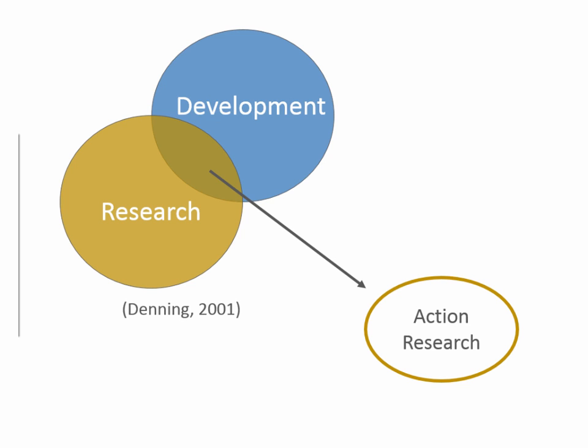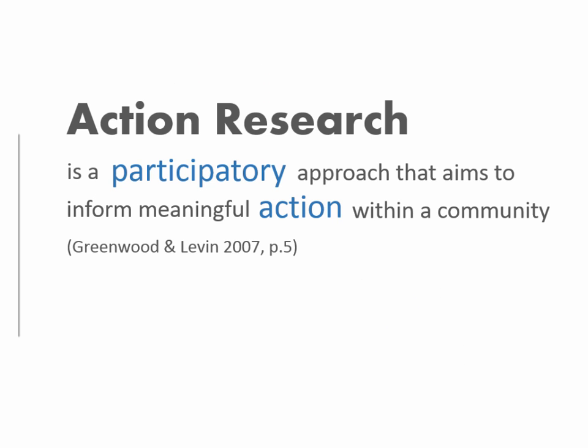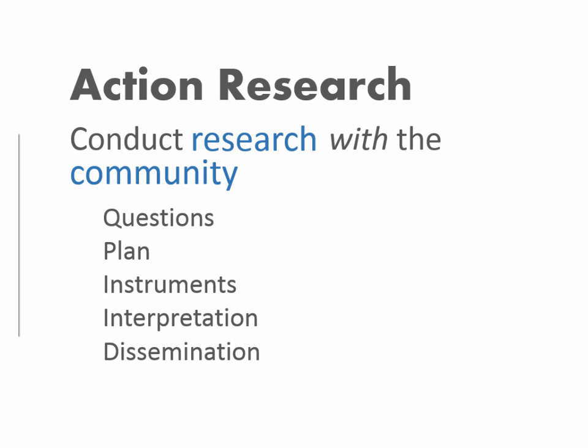That's where I've found action research to be applicable in helping us understand how to better employ community development in the US. Action research is a participatory process that aims to inform meaningful action in a community — it's conducting research with the community. Throughout the research process — developing a question, plan, instruments, interpretation, and dissemination — the community can be involved to different extents.